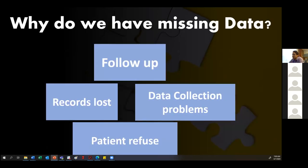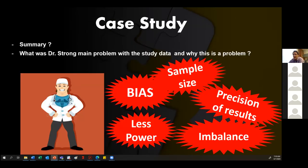Why do we have missing data? Why is data missing? If I'm looking at an Excel sheet and there's no number there — why can that happen? Can someone give me examples? If we try to find out the reasons, we can try to find out how we can control it.